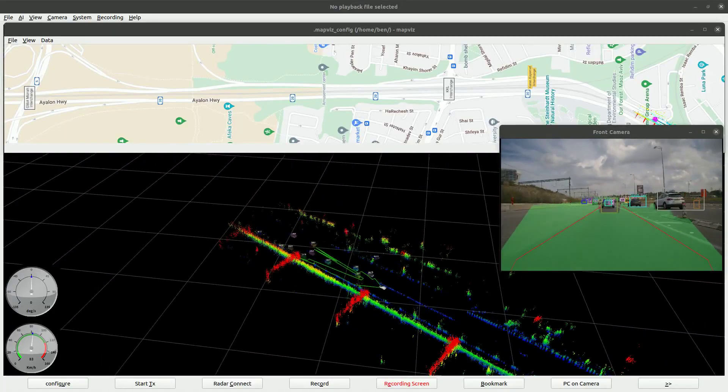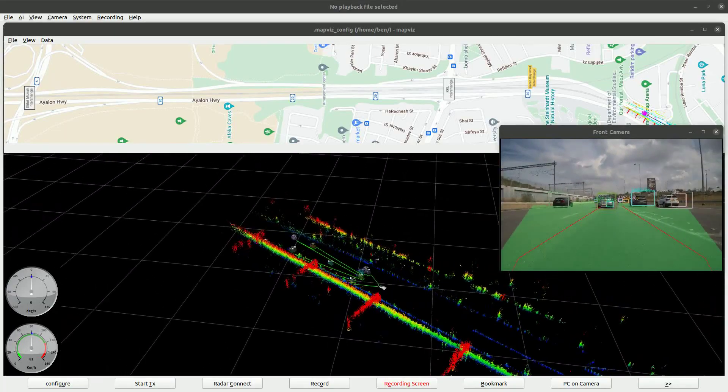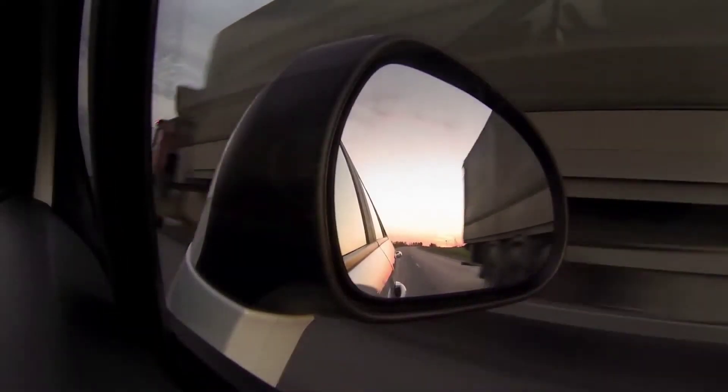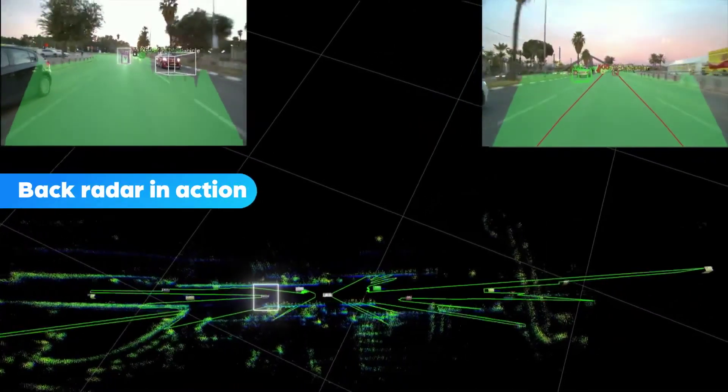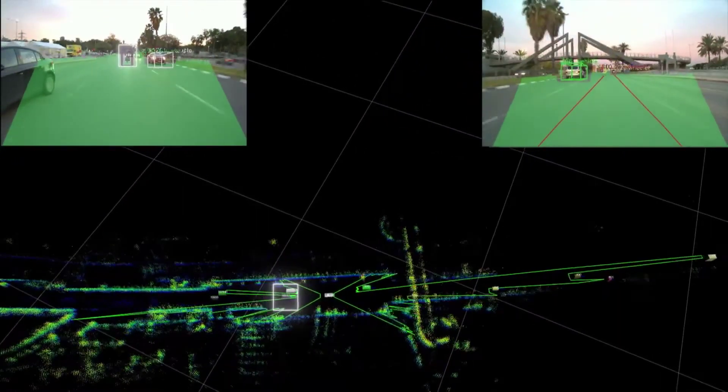These radar systems will be deployed in autonomous off-road vehicles for a U.S. defense customer and in a China-based intelligent road infrastructure project, highlighting Arbe's expanding footprint beyond the automotive sector.